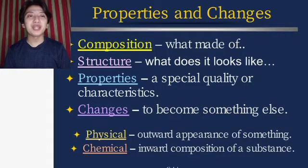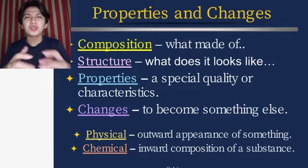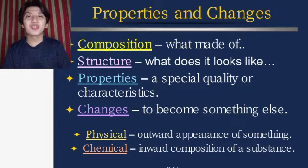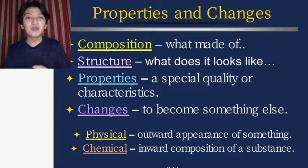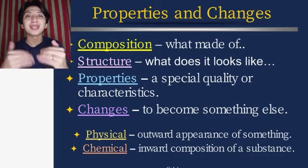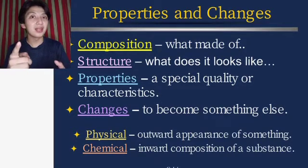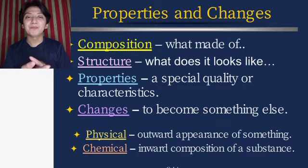These are the key properties and changes of matter. Composition is what something is made of — for example, H₂O is composed of two hydrogen atoms and one oxygen atom. Structure is what it looks like. Properties are the special qualities or characteristics of a substance. Changes means a transformation has happened. Physical refers to the outward appearance of something, while chemical refers to the inward composition of a substance. Remember those terms.